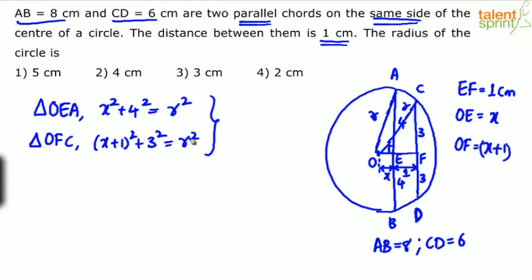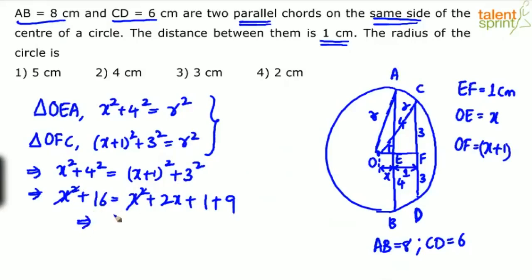Now compare these two. From these two equations, we can say X squared plus 4 squared equals X plus 1 whole squared plus 3 squared. X squared plus 16 equals X squared plus 2X plus 1 plus 9. X squared gets cancelled. We'll get 2X equals 16 minus 10, which is 6. So 2X is 6, which implies X is equal to 3 centimeters.